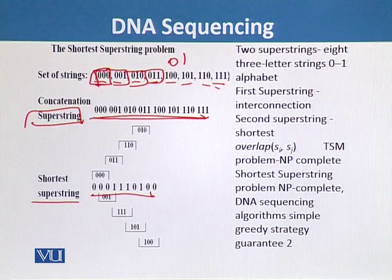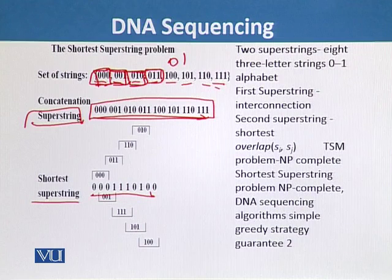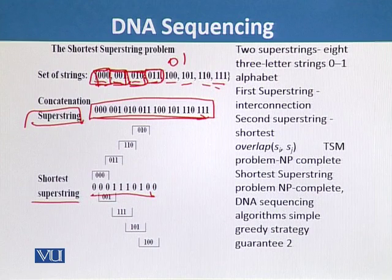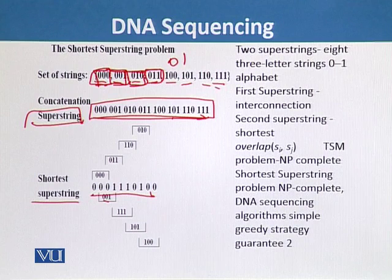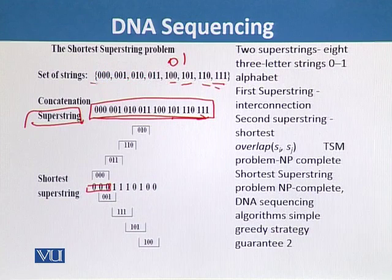We can assume these eight strings as fragments of DNA — first, second, third, fourth fragments — and if we join and combine them together we will get the whole sequence of the long genome. This is one technique we can use to get the superstring. The second superstring is the shortest superstring, and we can see its size is much smaller compared to the first. This shortest superstring is obtained by using these three-letter codes; for example, we can see here that zero-zero-zero is the first three-letter code.